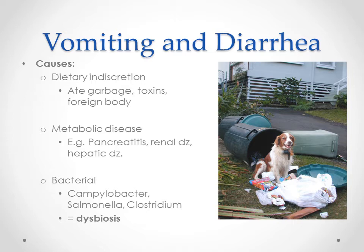Renal disease — kidney disease — can cause vomiting and diarrhea as well, more likely vomiting. As the kidneys fail to eliminate urea, nitrogen products, and creatinine, those toxins build up, causing nausea and vomiting, and sometimes gastrointestinal ulcers. Hepatic disease — liver disease — can also cause vomiting and diarrhea, partly from improper blood filtering and partly from decreased bile flow and bile use.